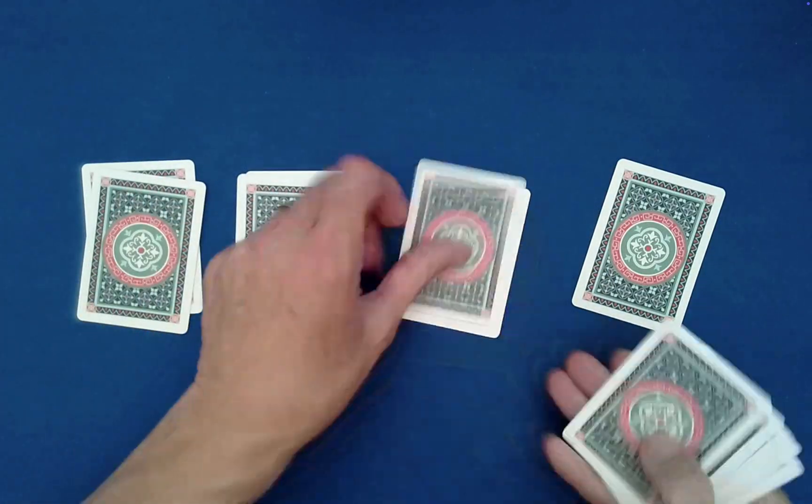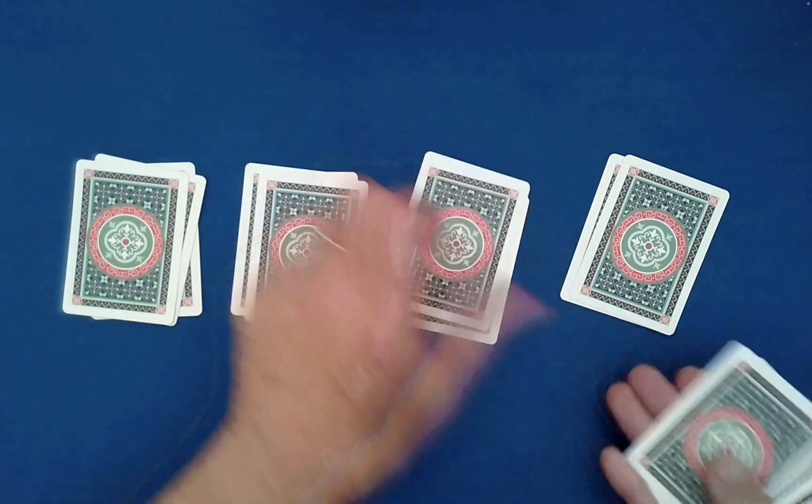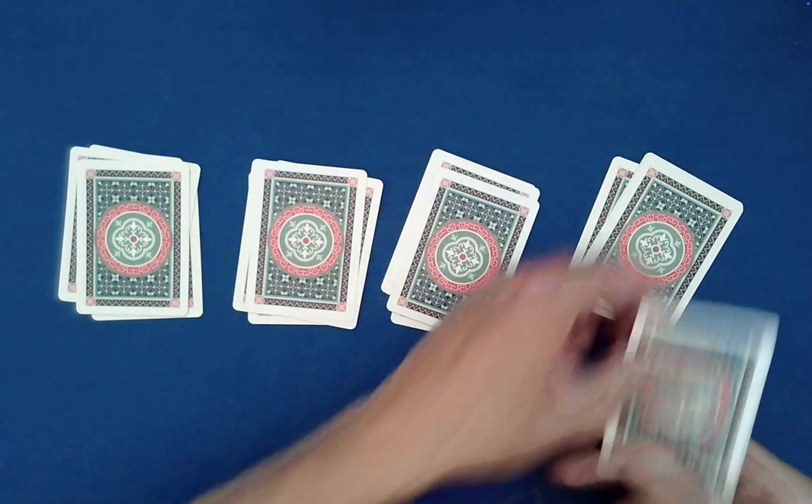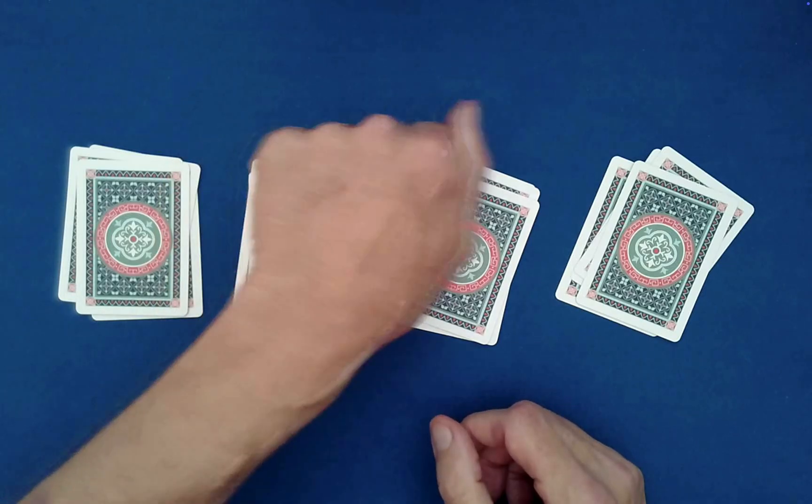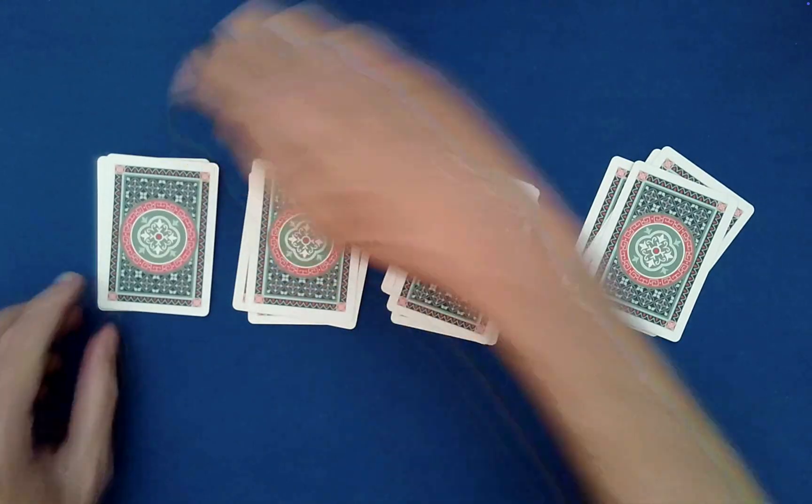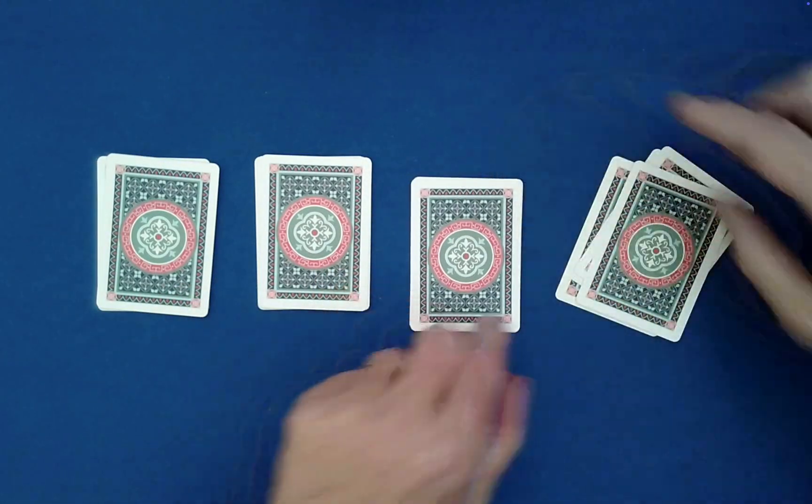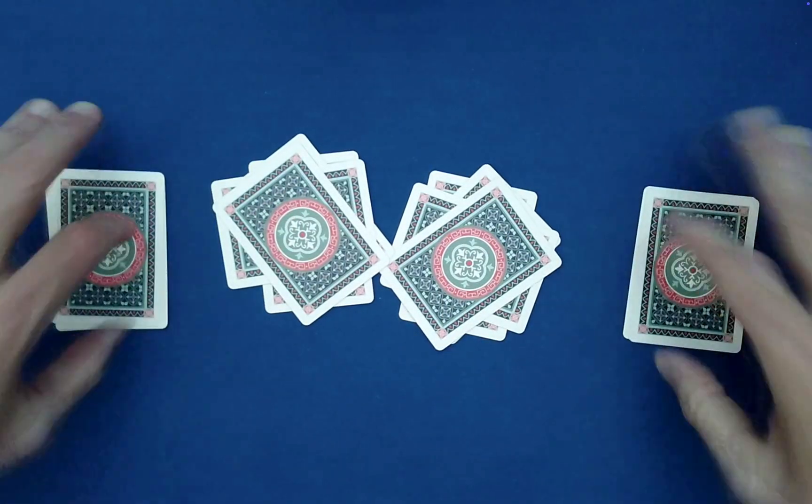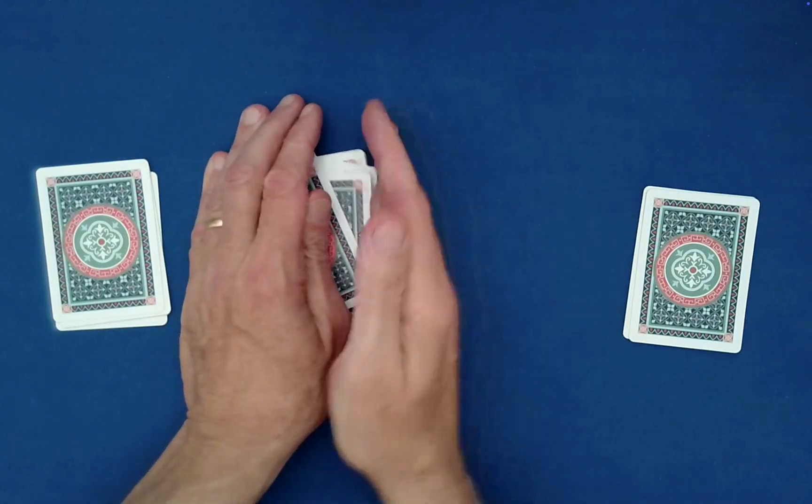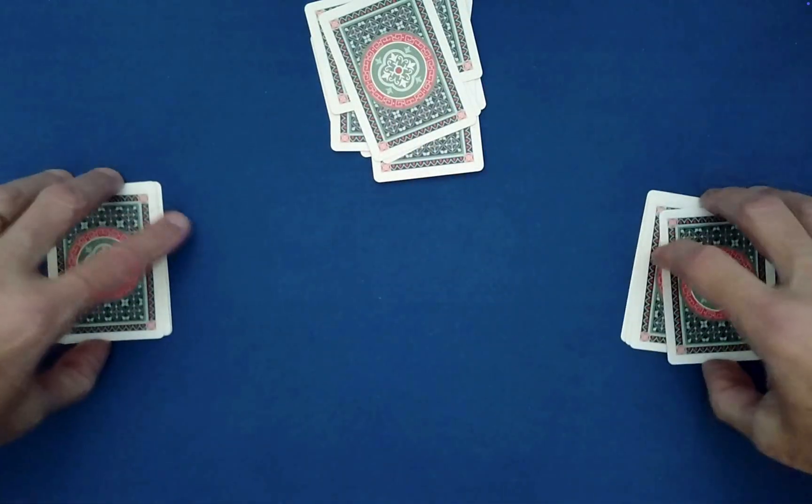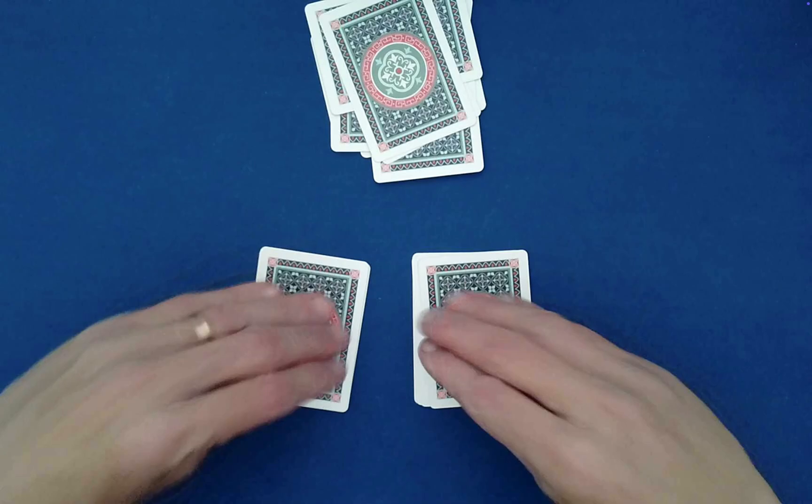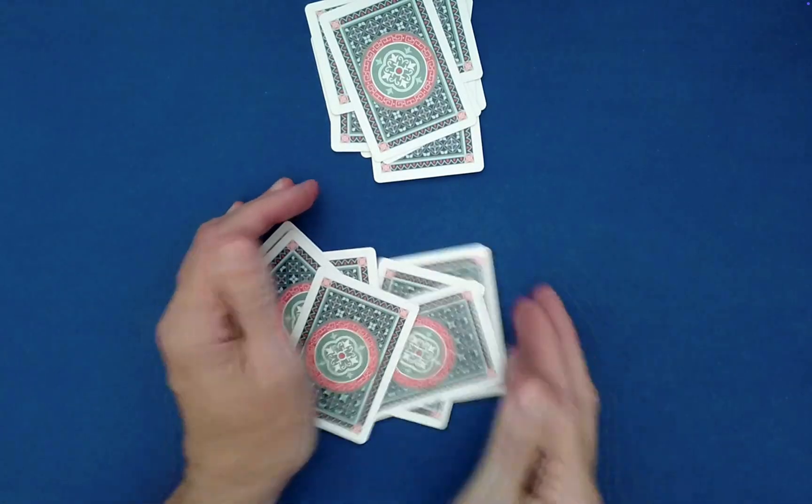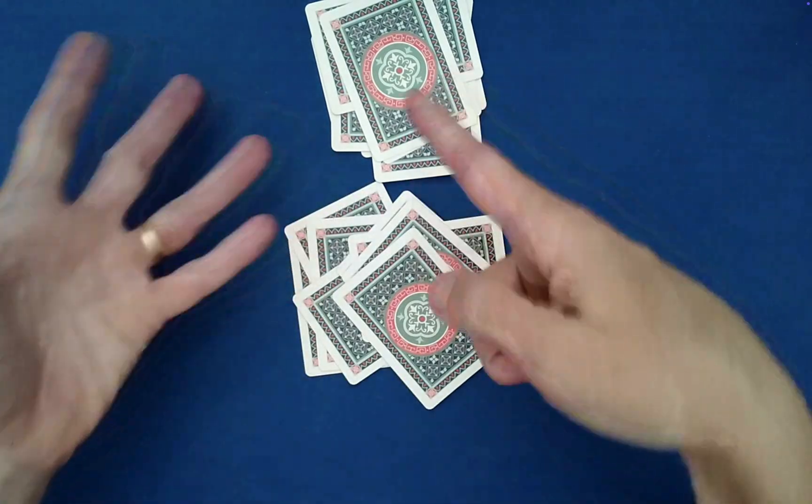Now I'm going to deal them out into four piles. This is different than what I was doing before - before I did one, two, three, four, one, two, three, four and so forth. We're going to go like this right here, and then we're going to do something we haven't done yet - we're going to do what's called a rosette shuffle. It's mathematically equivalent to a riffle shuffle.